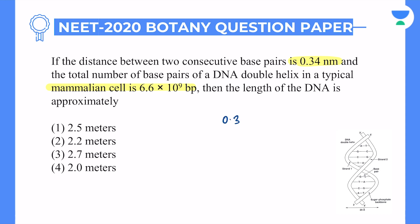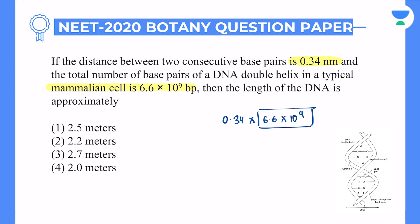What you can do is 0.34 × 6.6 × 10⁹, because each base pair has a distance between them. This gives you approximately 2.2 meters. If you want to save time, it is a direct NCERT line. And that is option number 2: 2.2 meters of distance.